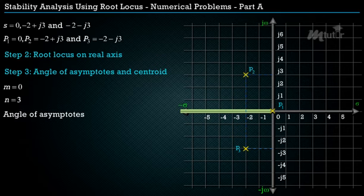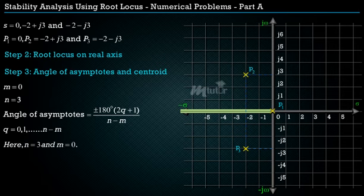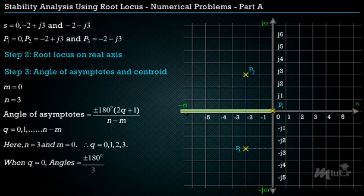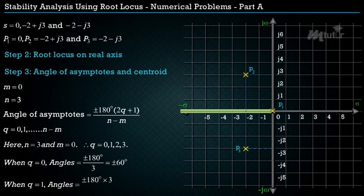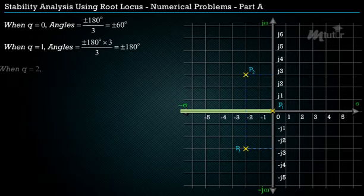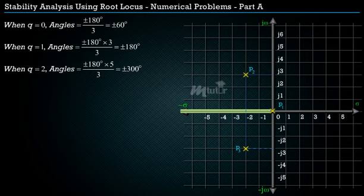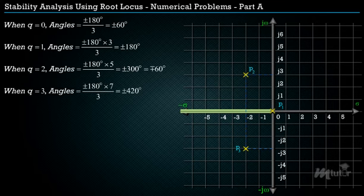The formula for the angle of asymptotes is applied with n = 3 and m = 0, giving q = 0, 1, 2, 3. When q = 0, the angle is ±60°; when q = 1, the angle is ±180°; when q = 2, the angle is ±300° (= −60°); and when q = 3, the angle is ±420° (= ±60°).